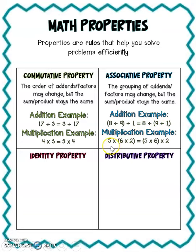With the multiplication example, I could group the 6 and the 2 first and multiply that by 5, or I could group the 5 and the 6 first and then multiply that by 2. Either way, my product is going to be 60.